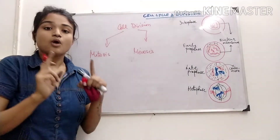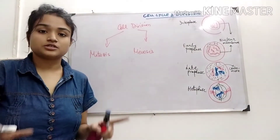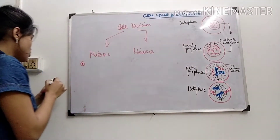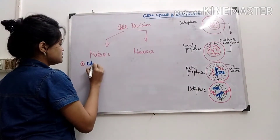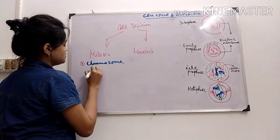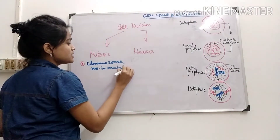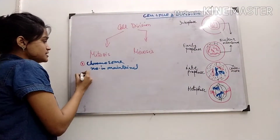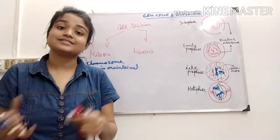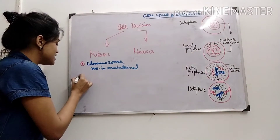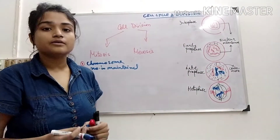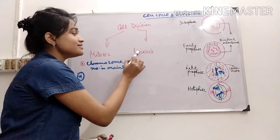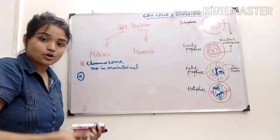In mitosis, one mother cell divides to give two daughter cells, so the chromosome number is maintained. If it is 2N in the mother cell, it will give 2N to the daughter cell. In mitosis, the cell size remains the same in the daughter cell as that of the mother cell.